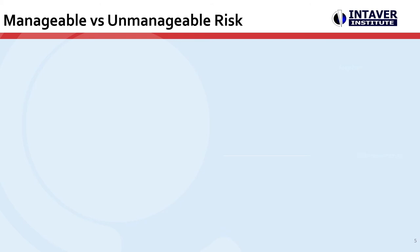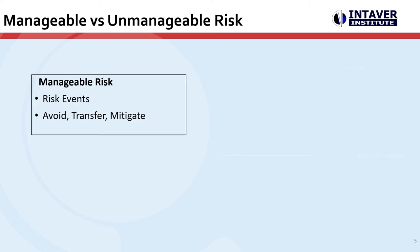Manageable versus unmanageable risk. Through the analysis of risks and uncertainties, two types of risk emerge: manageable and unmanageable risk. Manageable risk is the impact of risk events. This risk can be managed by either minimizing the probability or impact of the risk. One aspect of this management is mitigation planning.